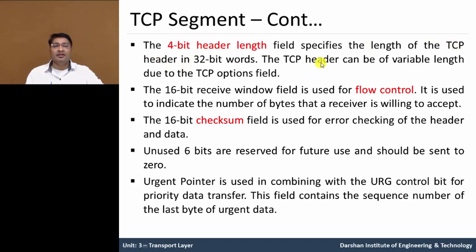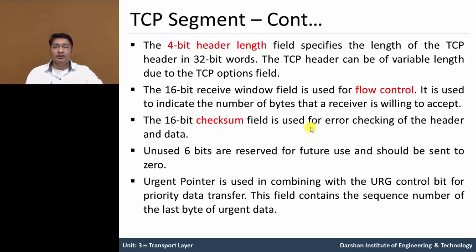The TCP header can be variable length due to the optional fields of the TCP segment. The 16-bit receiving window is used for flow control — meaning the packet receiving capacity at the receiving side. It indicates the number of bytes the receiver is willing to accept from the sender. The 16-bit checksum field is used for error checking of the header and data.